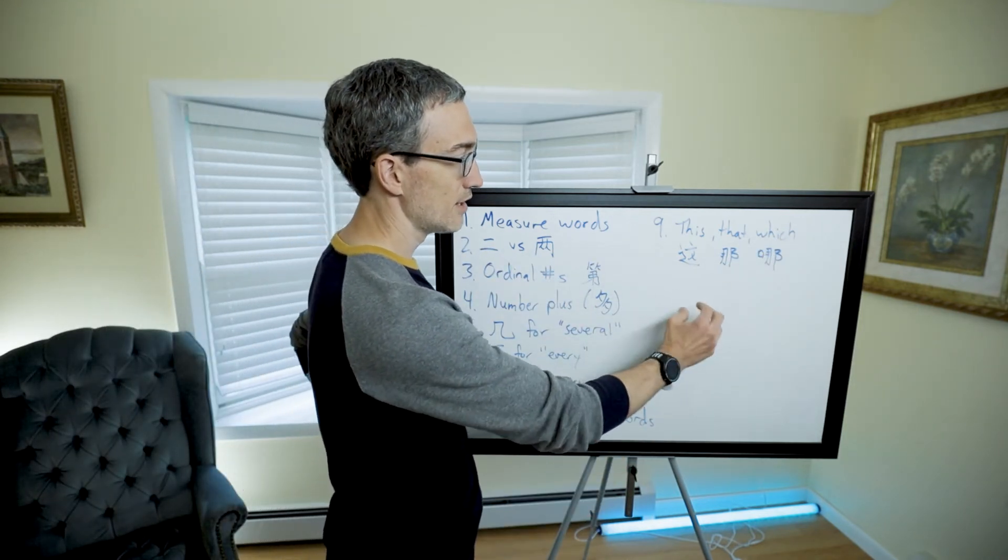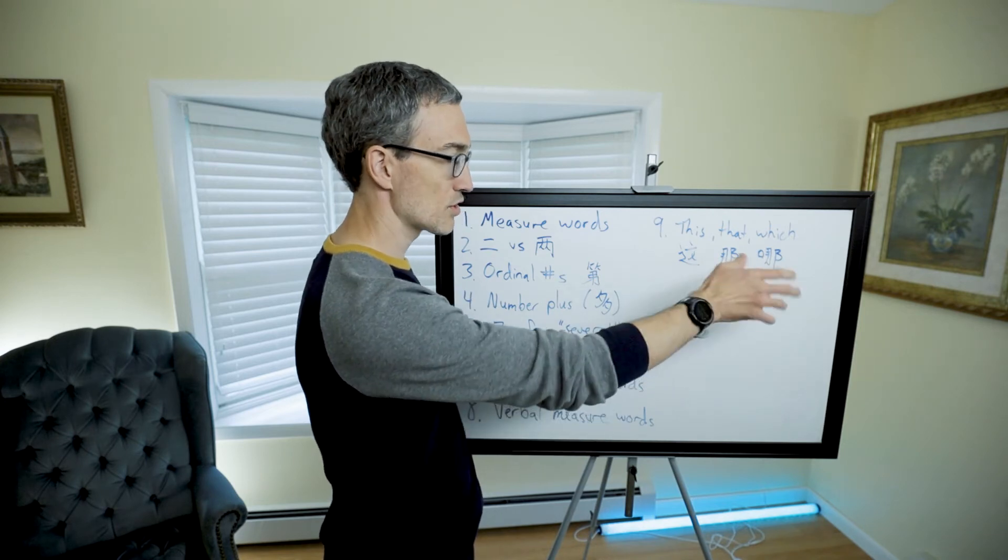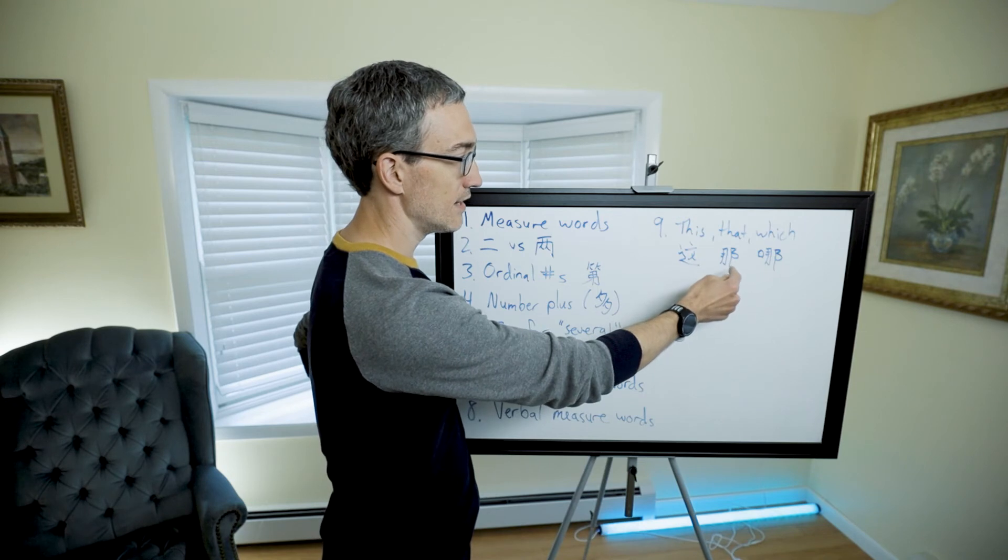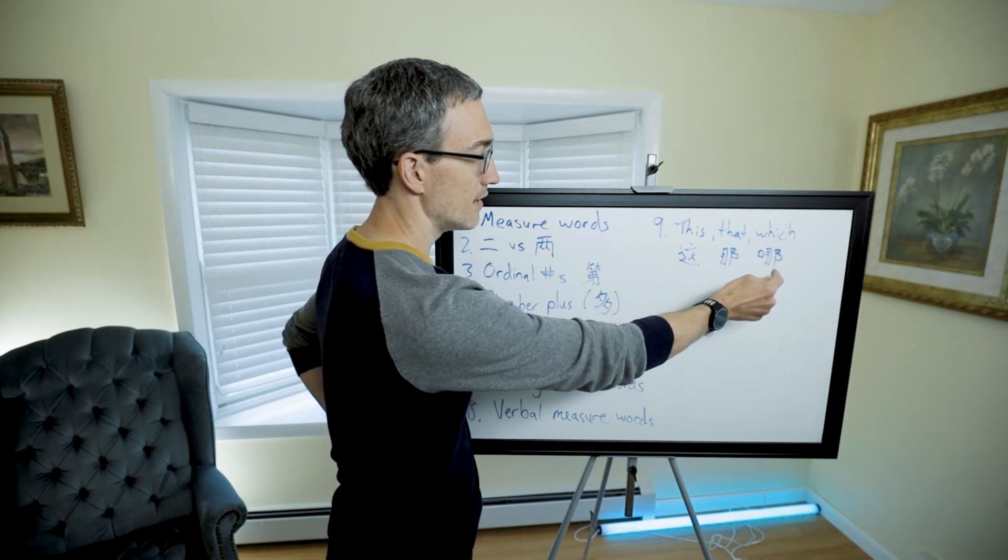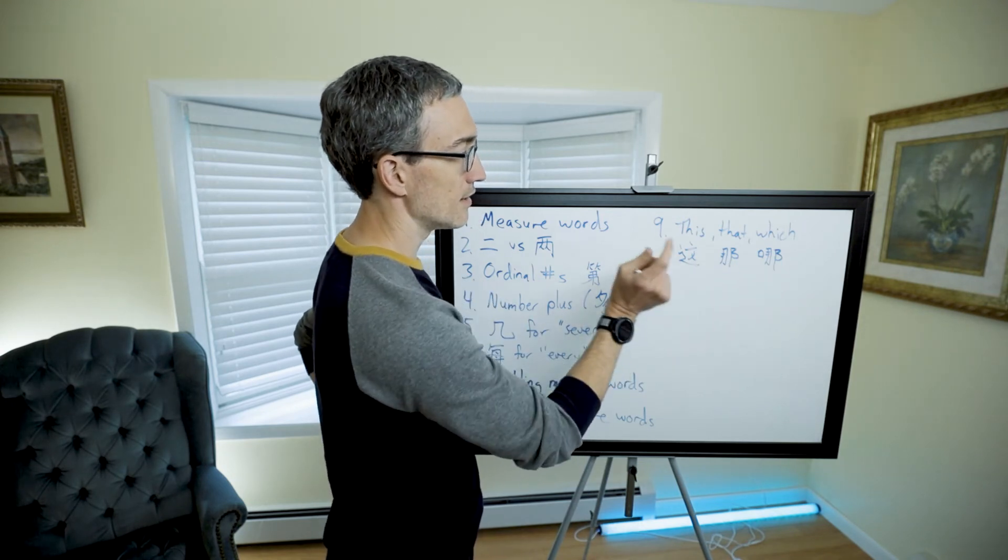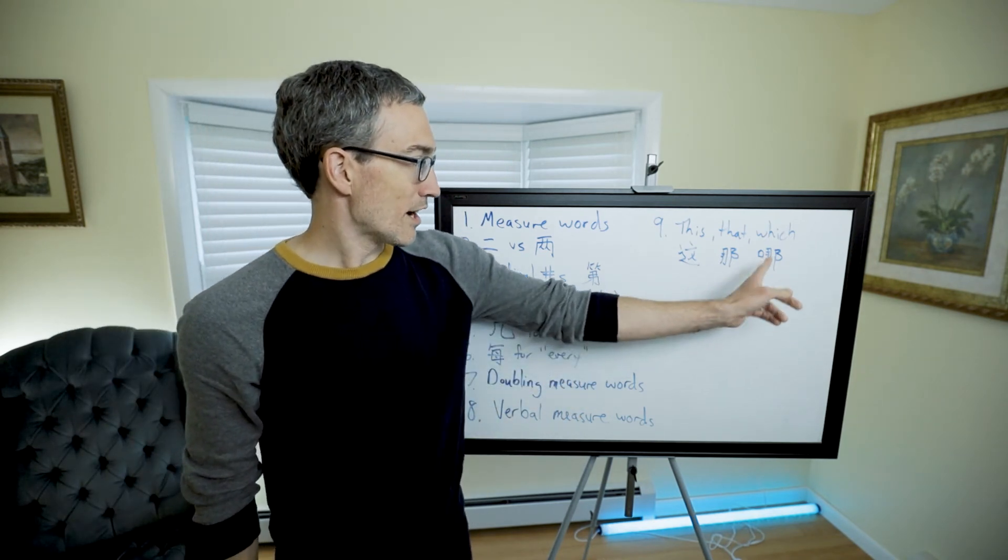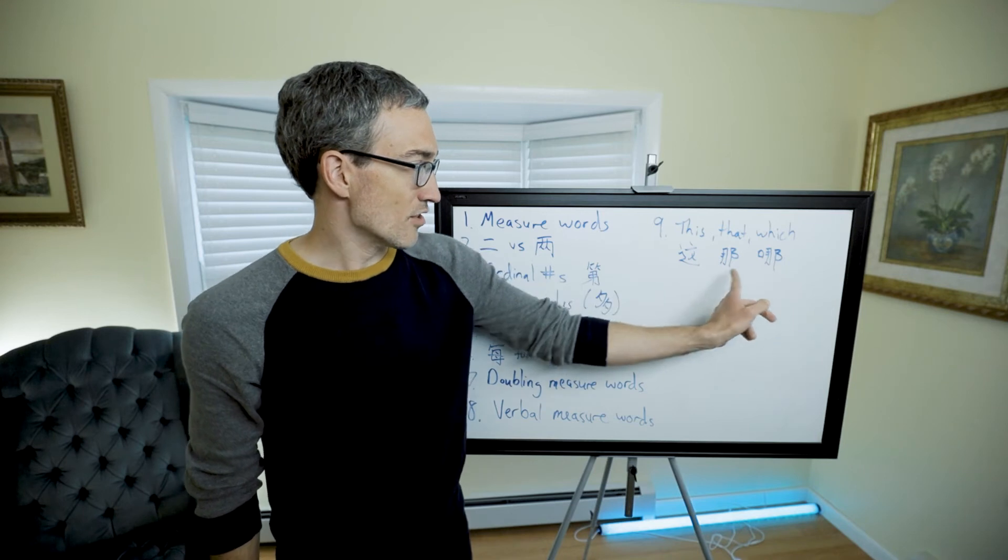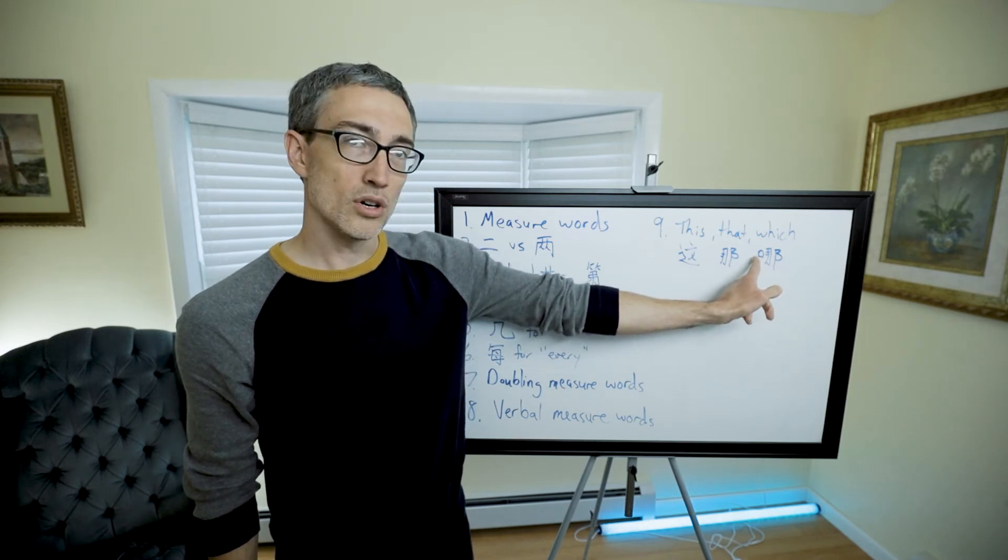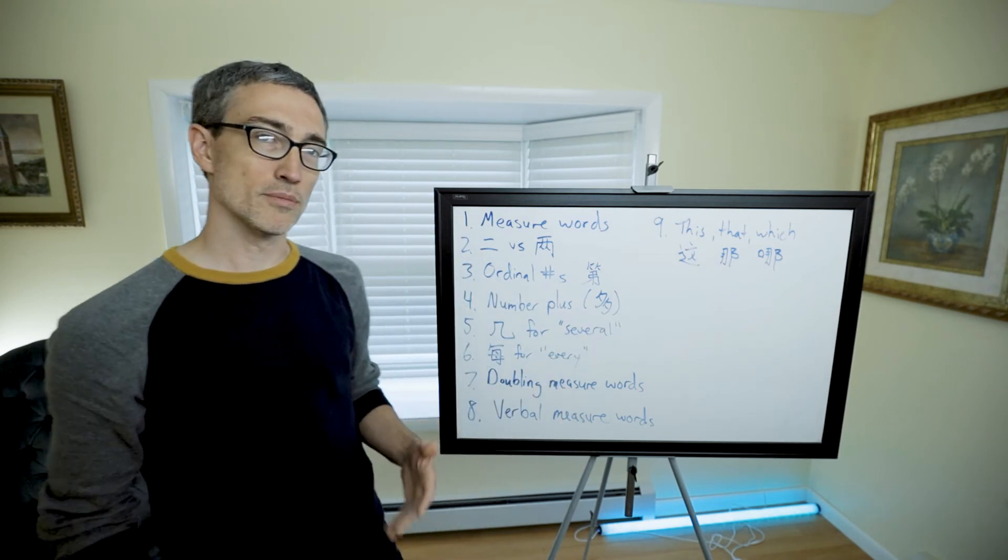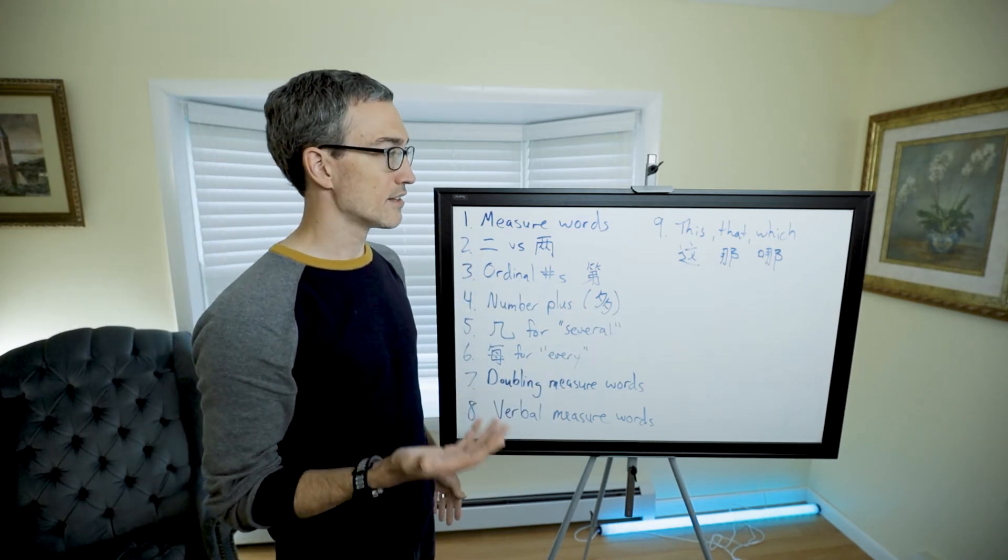And then finally we talked about this, that, and which. You put generally a measure word after it, sometimes a noun, to say which thing, this thing. It is 这 (zhè) or 这 (zhèi), 那 (nà) or 那 (nèi), and 哪 (nǎ) or 哪 (něi). I didn't point out in the video that these characters are the same except this has a 口 (kǒu) on the side and this doesn't.